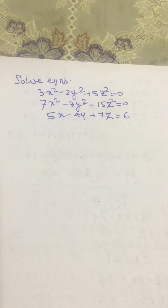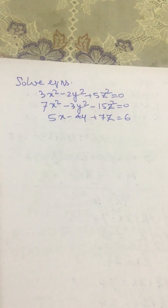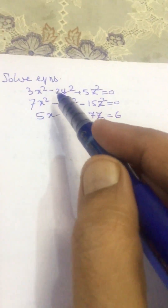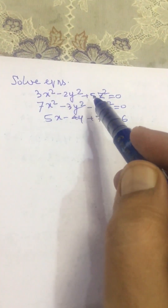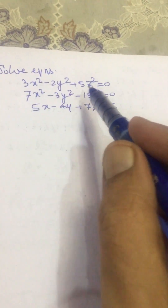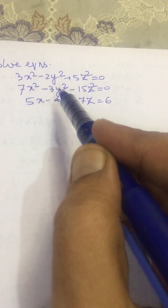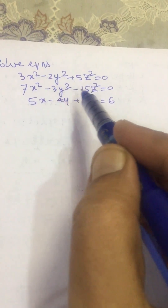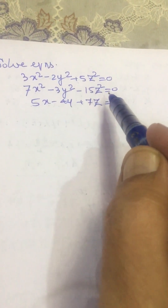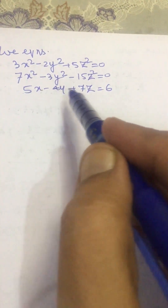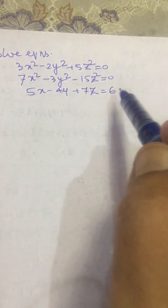Dear friends, welcome to my channel. In this video we will solve the equations: 3x² minus 2y² plus 5z² equal to 0, 7x² minus 3y² minus 15z² equal to 0, and 5x minus 4y plus 7z equal to 6.